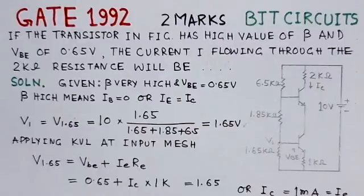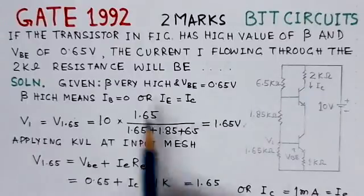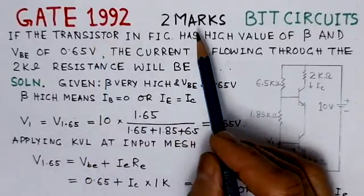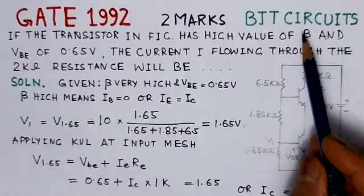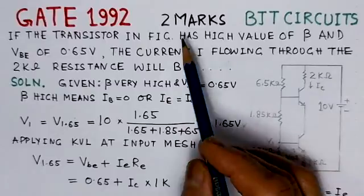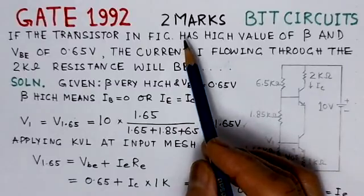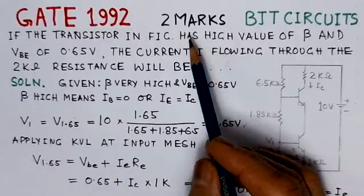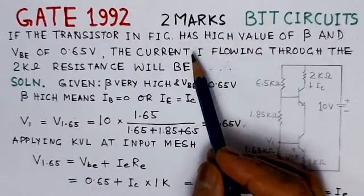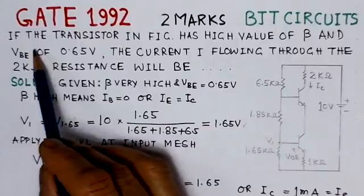The present problem is from GATE 1992 and it is worth 2 marks on BJT circuits. This is the last problem on BJT circuits, especially on the topic of biasing and BJT configurations. We will read out the problem here.